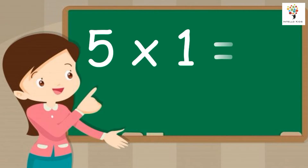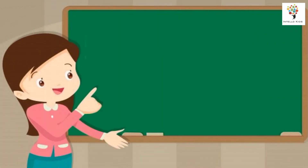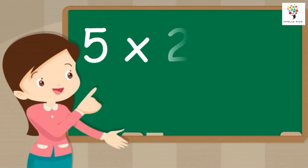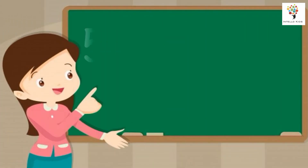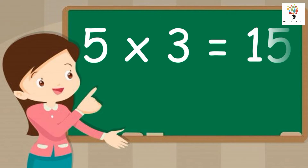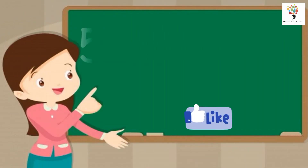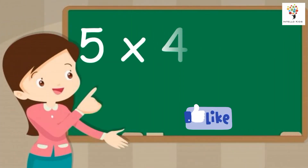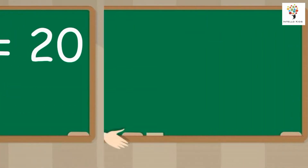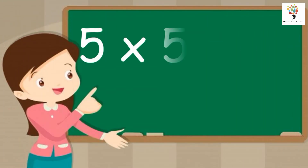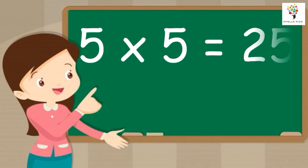Five ones are five. Five twos are ten. Five threes are fifteen. Five fours are twenty. Five fives are twenty-five.